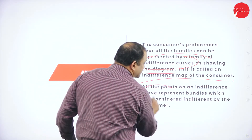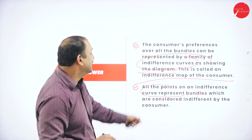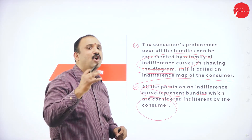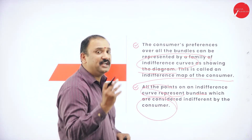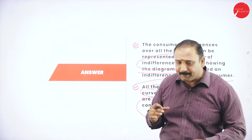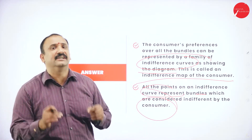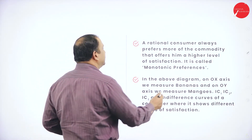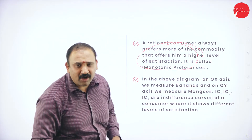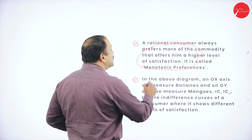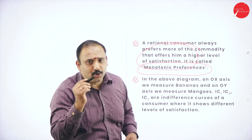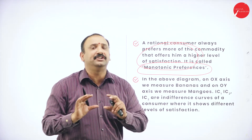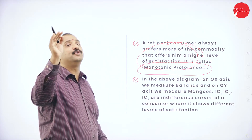When we say indifferent, it means the bundles make no difference to the consumer — the consumer's mind is fixed and clear about choices. A rational consumer will always try to prefer one commodity over the other that offers a higher level of satisfaction, and this is called monotonic preference. Monotonic means the preference of one product over the other on a continuous basis.